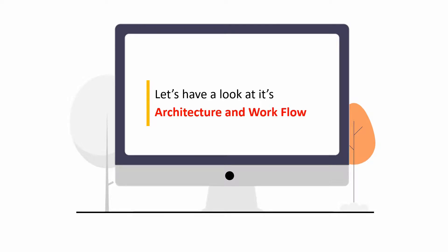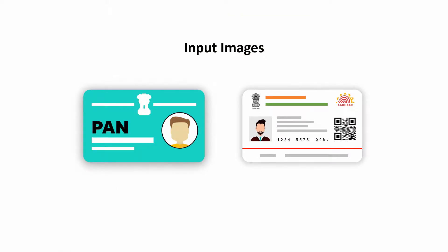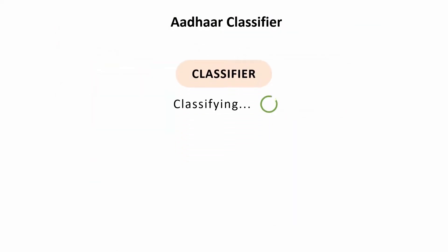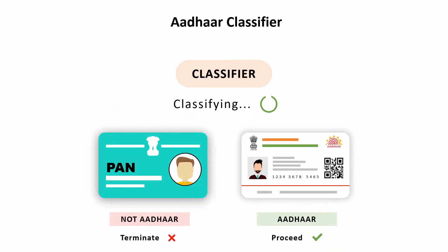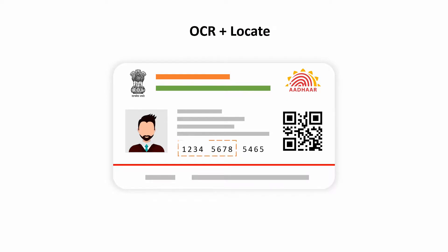Now let's have a look at the product's architecture and workflow. We start with passing the images to the Aadhaar classifier engine. It is first determined whether the given image is an Aadhaar or not; if it is not, the process is terminated with an intimation that the image is not an Aadhaar card. Once the image is classified as Aadhaar, the next step is to locate the first eight digits of the Aadhaar number. This is done with the help of optical character recognition, and then it is masked with the specified pattern. The masked image is then stored in the specified location.